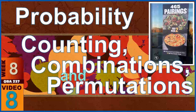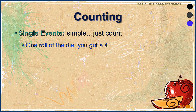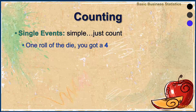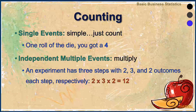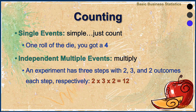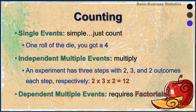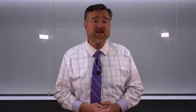Counting combinations and permutations. Counting for a single event is quite simple — you just count. Roll a die one time, any outcome is 1 over 6. For independent multiple events, we can multiply, but for dependent multiple events, we must use factorials. Therefore, we need to know what a factorial is and how it can be used.